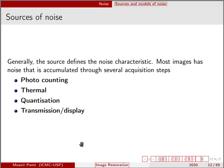We are going to start by talking about sources of noise. How can we obtain some prior knowledge about noise? Commonly, the source defines the way the noise is observed. Most images have noise that is accumulated via some steps of acquisition. Usually those steps are photon counting, thermal, quantization, and transmission or display. They may occur at the same time, or one may occur at a higher level than the other, but all of them occur at some level. The most significant ones are probably the photon counting and the thermal noise.